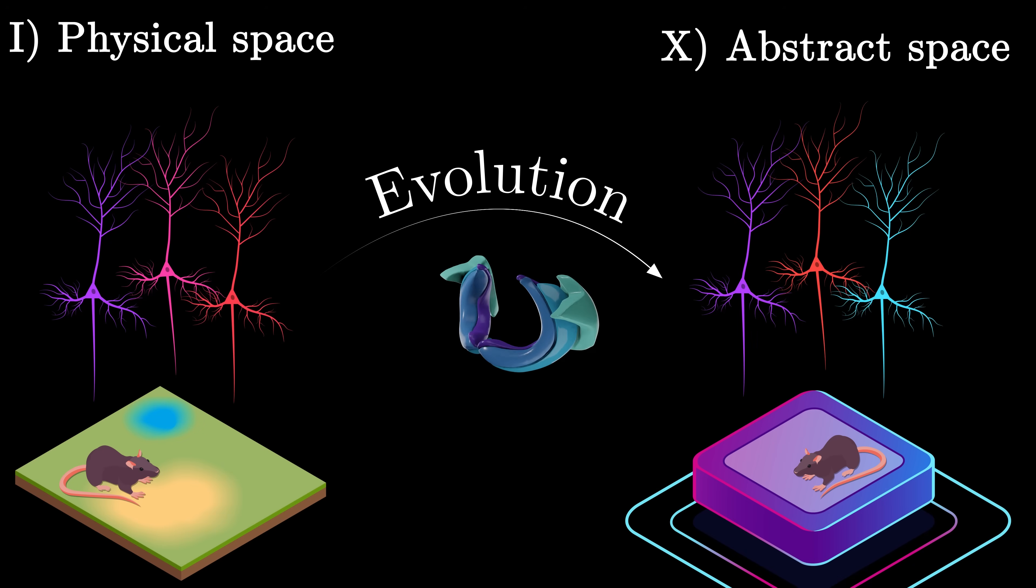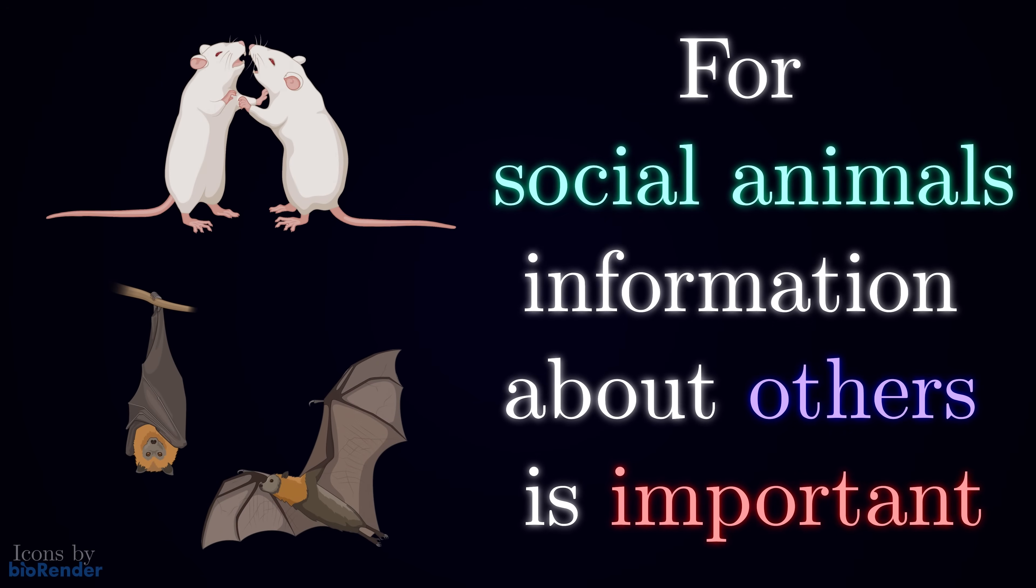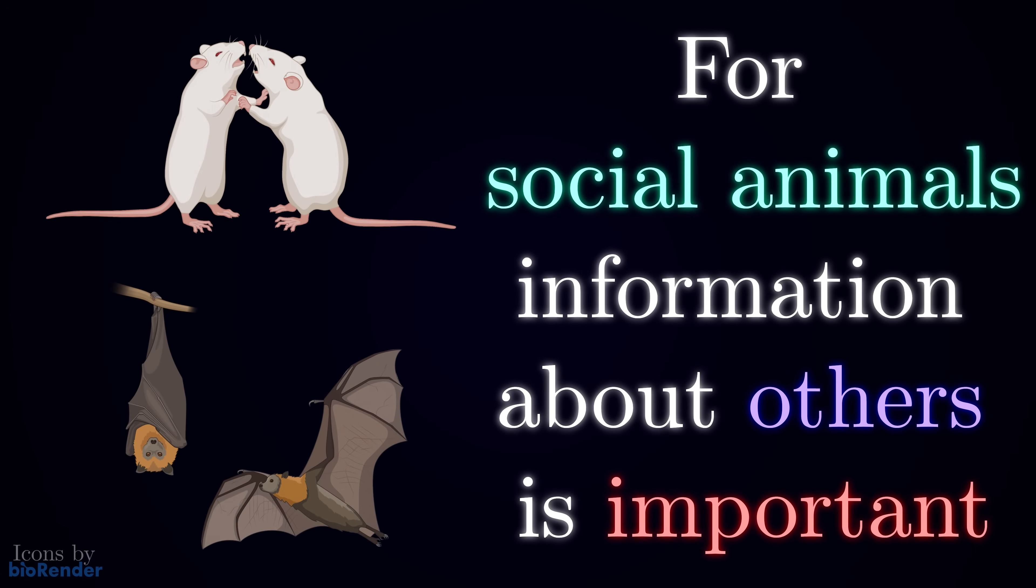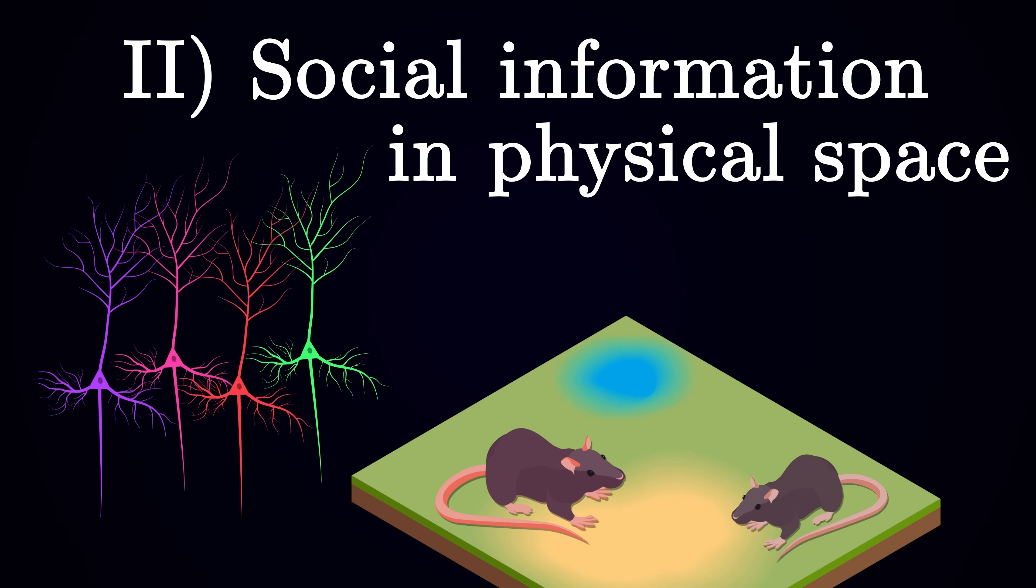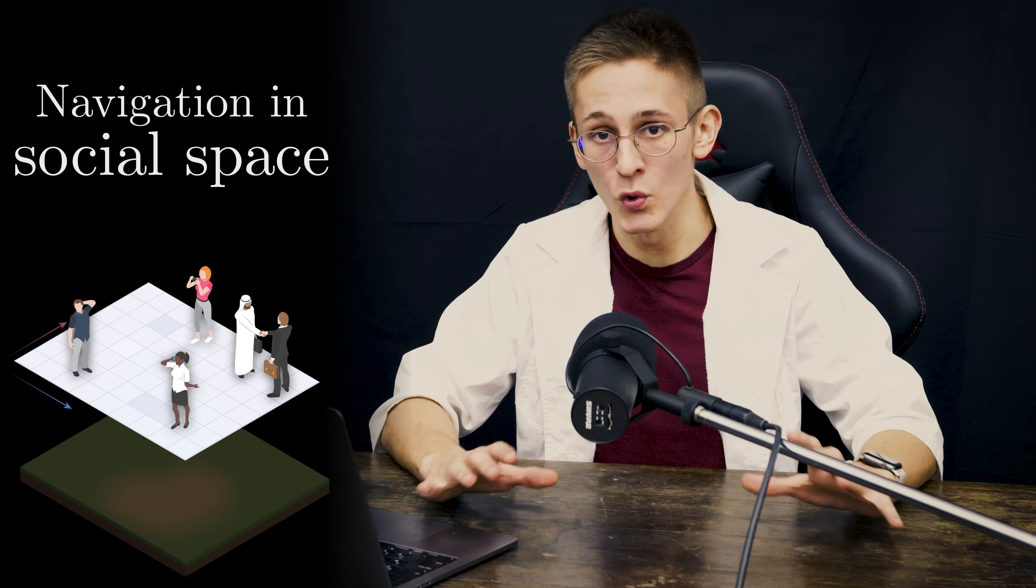And one of such new jobs of the hippocampus is really prominent in social animals. To them, other conspecific individuals is an important aspect of the outside world. So it makes sense to embed information about them into the existing map of physical space. Let's call this stage social information in physical space. Finally, if we increase the level of abstraction even further, which is the case for humans, we can expect a complete detachment of social information from the physical environment. After all, we can navigate the network of our friends while sitting still on the couch with no one around. This is navigation in a purely social space.